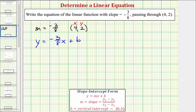So performing substitution, we would have two equals negative three-eighths times x, which is equal to four, which I'll go ahead and write four as four over one, since the slope is a fraction, plus b.